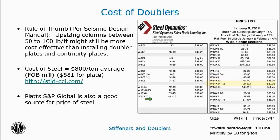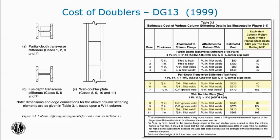One thing that should be noted is that for columns greater than a 14x132 — so a 14x145 to a 14x283 — the price per ton significantly increases, over a $200 per ton increase for the heavier W14 column sizes. This needs to be considered when evaluating whether it's more cost-effective to increase the column size to eliminate the need for stiffeners and doublers. Design Guide 13 has a discussion on cost, but keep in mind it was written in 1999 when the cost per ton of steel was $425 per ton — still a good reference since steel and labor costs have likely gone up in proportion to each other.